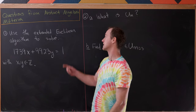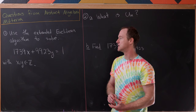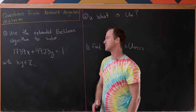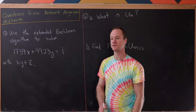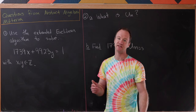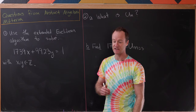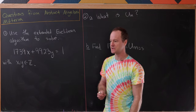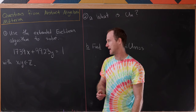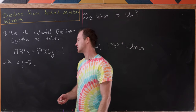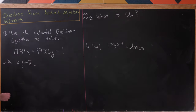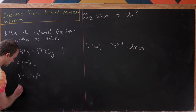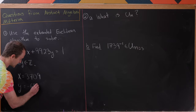It starts fairly simply. Let's use the extended Euclidean algorithm to solve the following equation over the integers. We have 1,739x plus 9,923y equals 1. On the exam it was equals the GCD of those two numbers, but it's pretty easy to calculate the GCD to be 1 using the regular Euclidean algorithm. I'm not going to do this on the video — this is just really a computational exercise and it kind of takes a long time. There are infinitely many solutions, but one of them looks like this: x equals 3,709, whereas y is equal to negative 650.